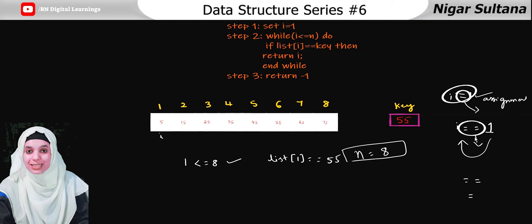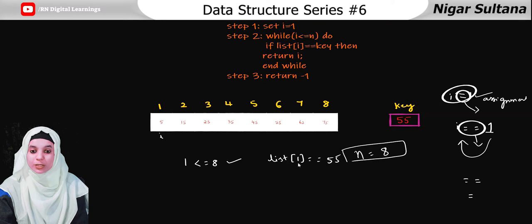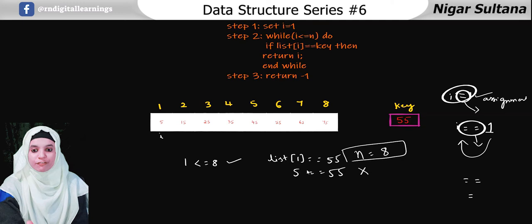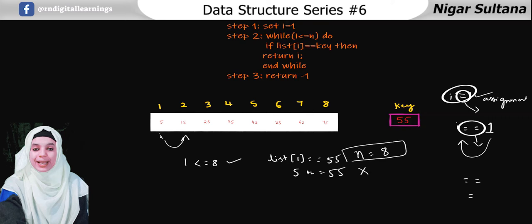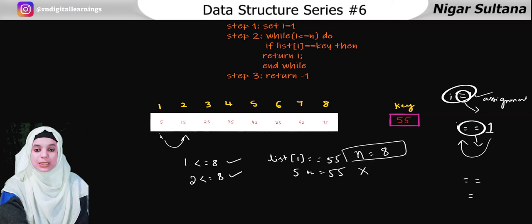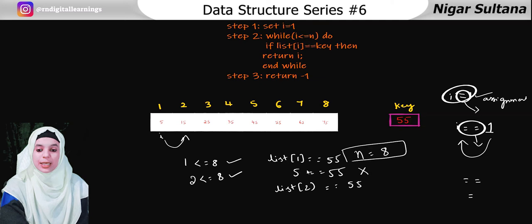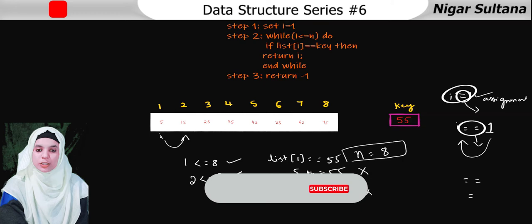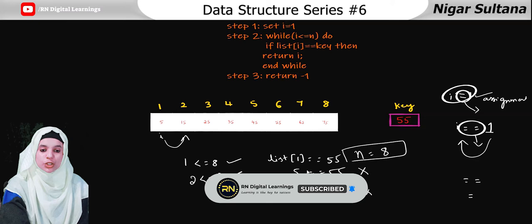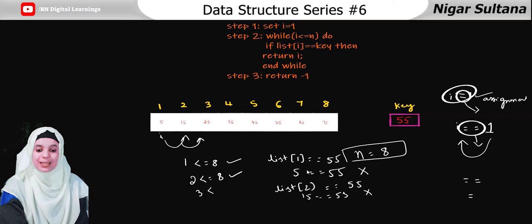We compare list of i with key. i is 1, so list of 1 is 5. Is 5 equals to 55? This is false — not equal. So we increment i. Now i is 2. Is 2 less than or equal to 8? True. Check: list of 2 is 15. Is 15 equals to 55? No, again false. Increment i — i is now 3.